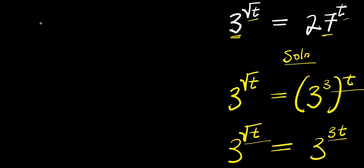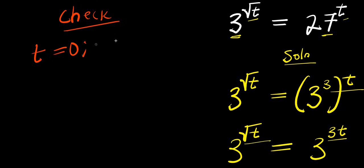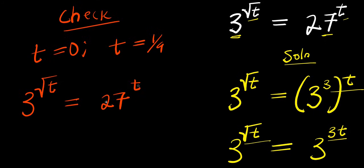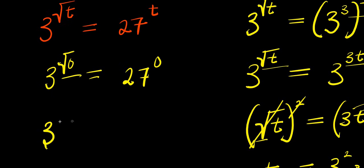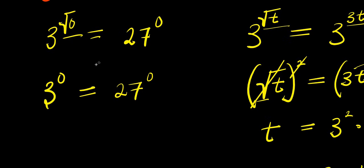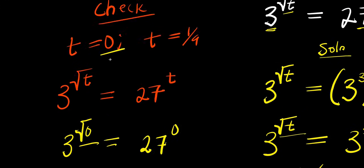Let's check both solutions. First, t equals 0: the original equation is 3 to the power of square root of t equals 27 to the power of t. Substituting t equals 0, we get 3 to the power of square root of 0, which is 3 to the power of 0, equals 27 to the power of 0. Any number raised to the power 0 is 1, so we get 1 equals 1. This confirms t equals 0 is correct.